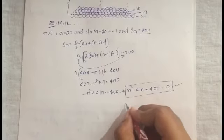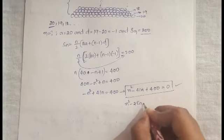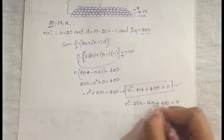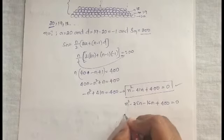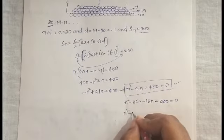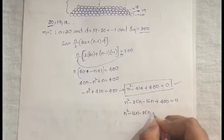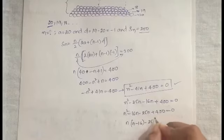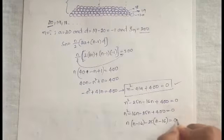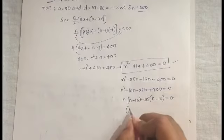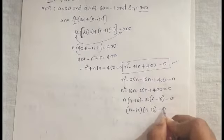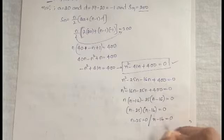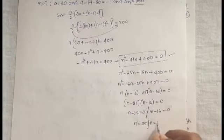Factorizing: n² − 41n + 400 = 0 becomes (n − 25)(n − 16) = 0, giving n = 25 or n = 16.